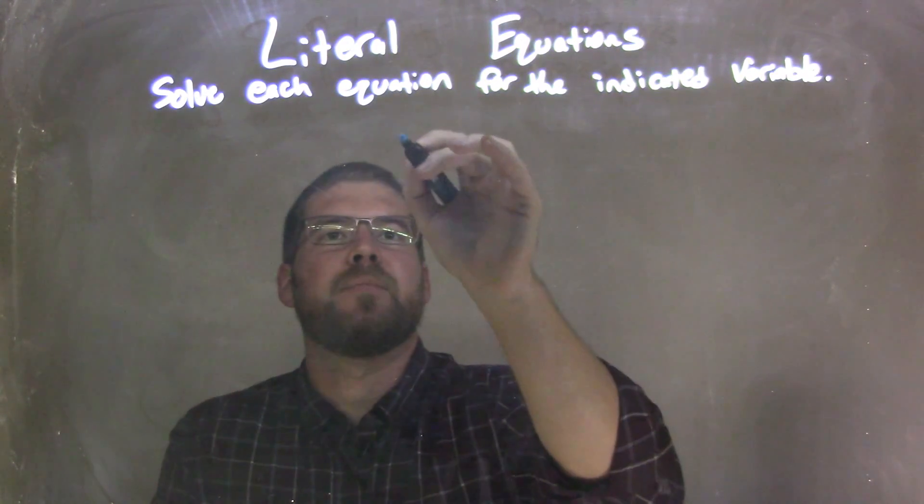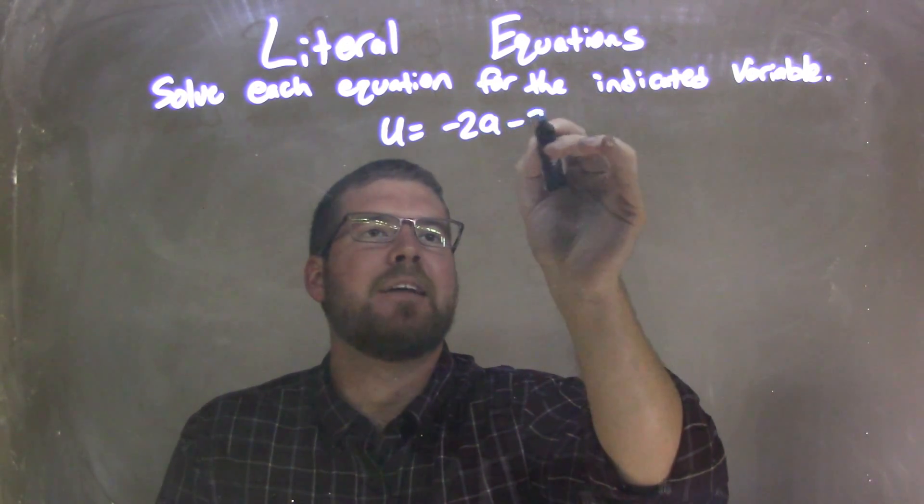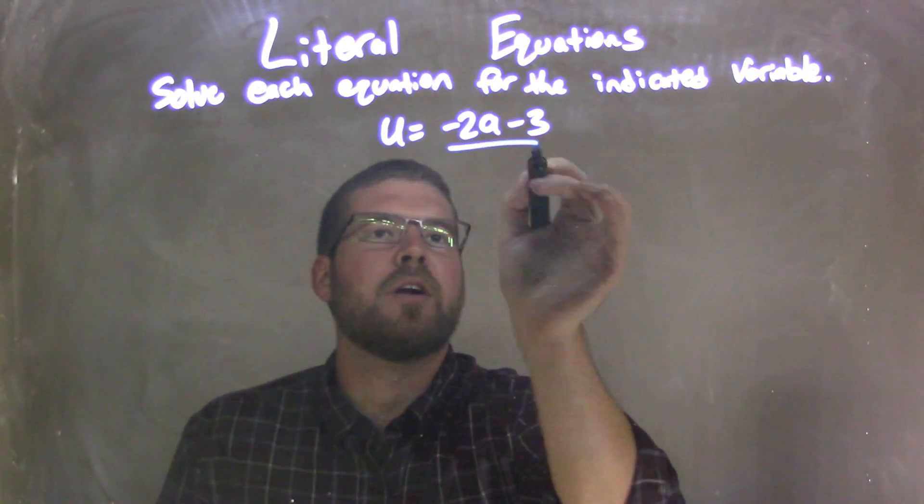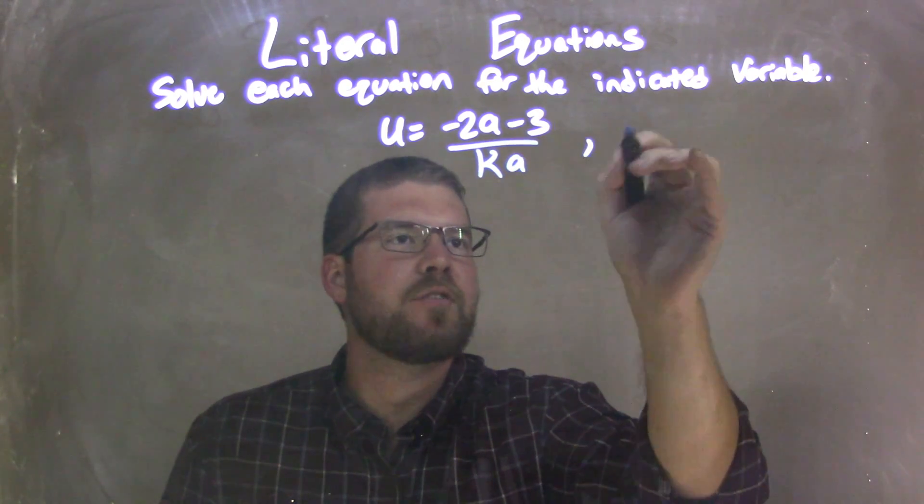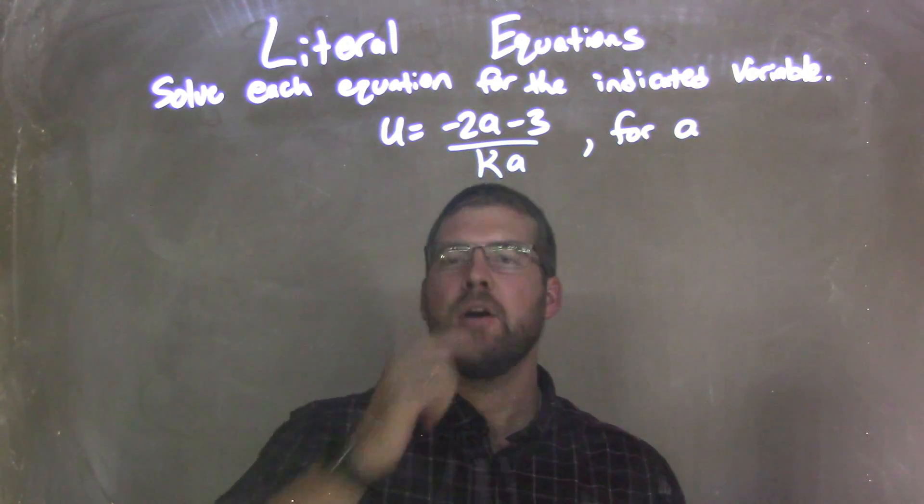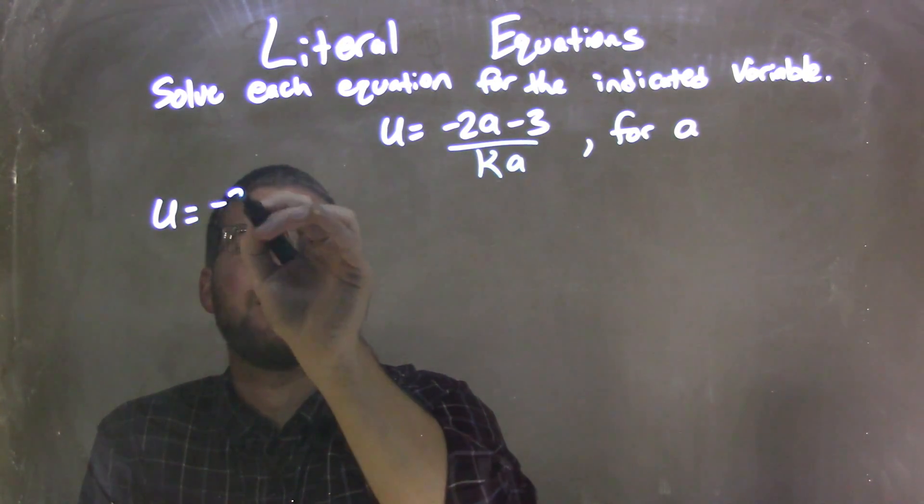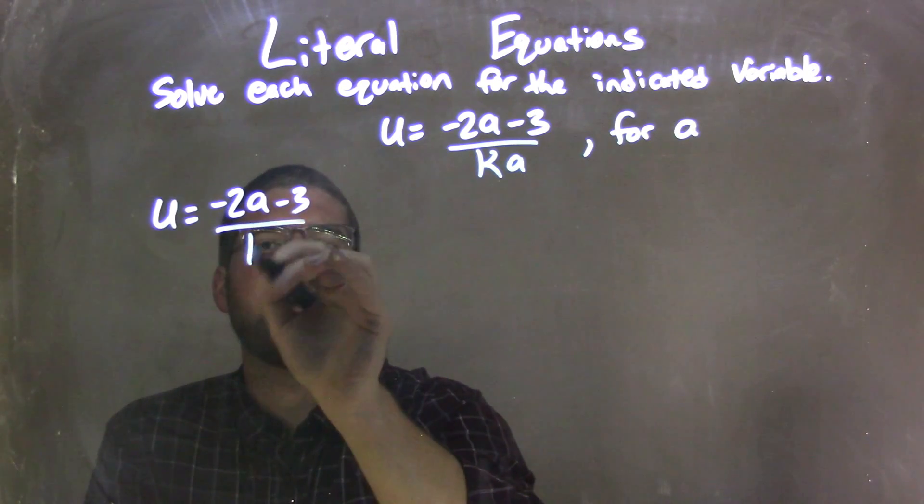So if I was given this equation, u equals negative 2a minus 3 all over ka, and we're going to solve that for a. I'm going to rewrite my equation over here so I have some room. u equals negative 2a minus 3 over ka.